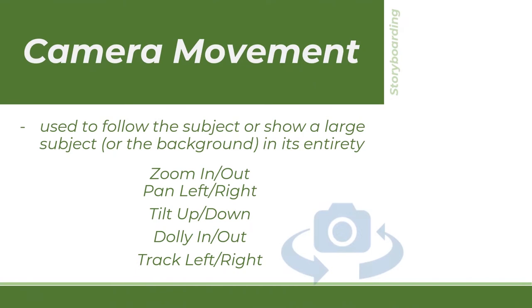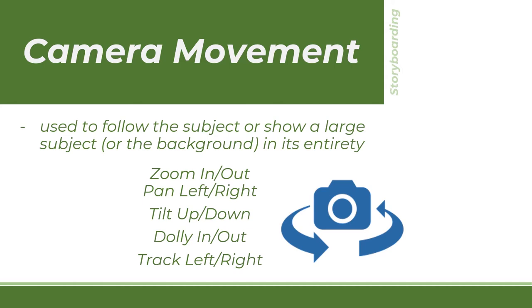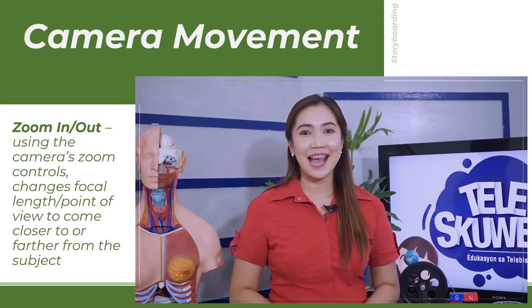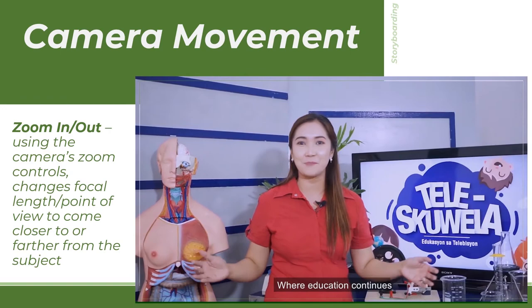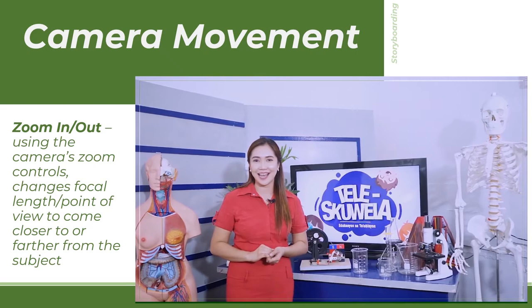Another key element in storyboarding is camera movement. What we are about to discuss are just the basic ones that may be useful in the insert video. First is zoom in or zoom out, which emphasizes the subject. As the video is being zoomed, the attention of the viewer focuses on the subject while revealing or hiding other elements on the screen. I will show you a sample clip from our Telescuela episode — a combination of zoom out and pan right.